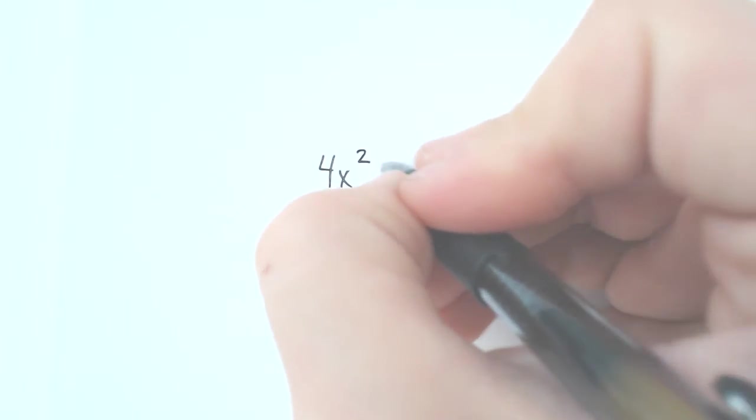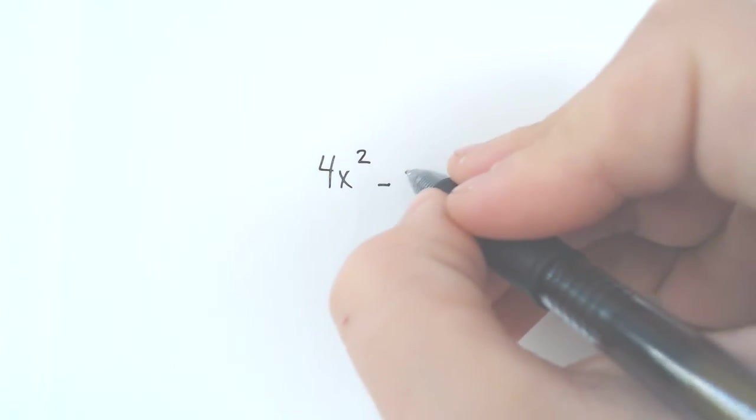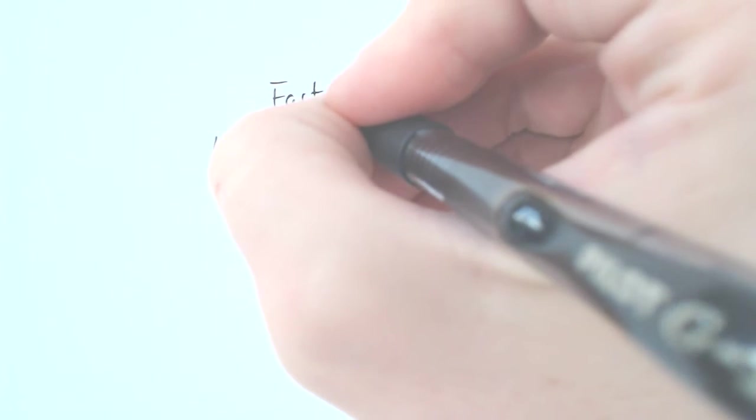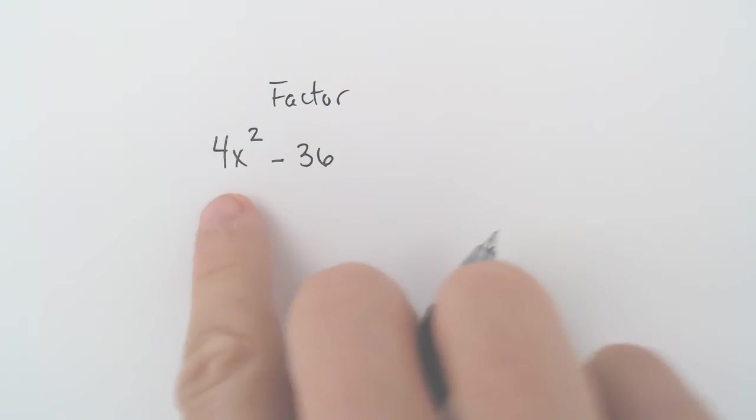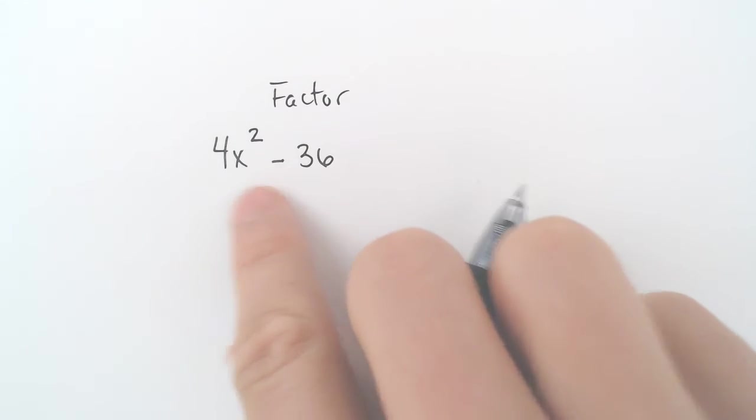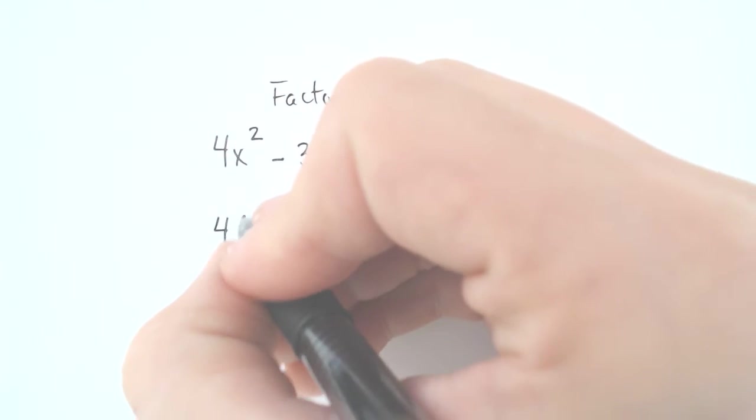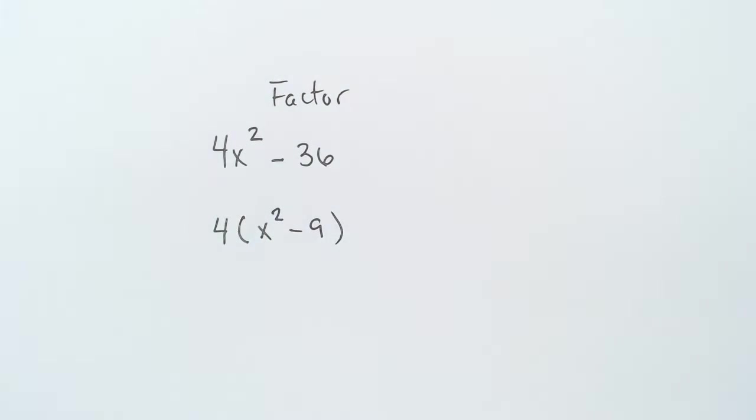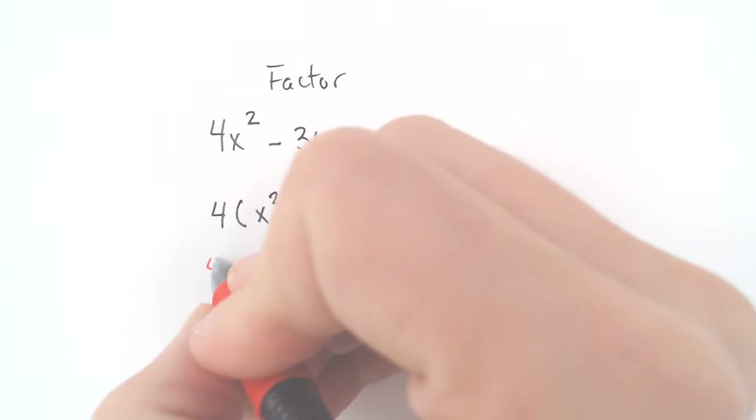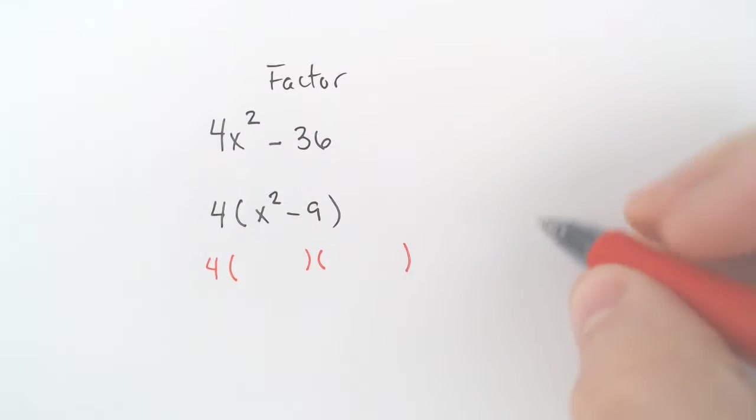You will also have to do a basic factoring problem. So something that looks like this. We got 4x squared minus 36. Now, this one's actually unique because if you are factoring ever, you sometimes will have to factor to solve, and other times you're just factoring to write the factors. And if you're factoring to write the factors, you need to look to see if you can divide both things by a number. And in this case, you can. You can divide both of those by 4.